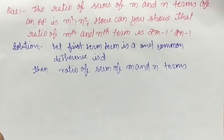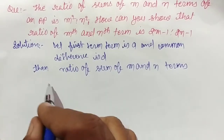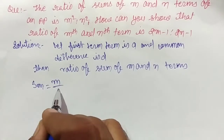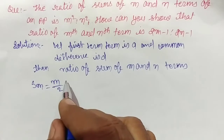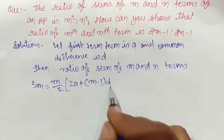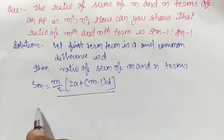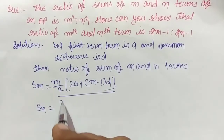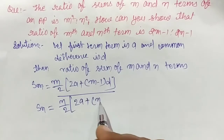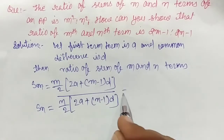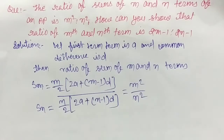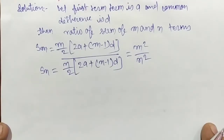Sm will be equal to (m/2) × (2a + (m-1)d), divided by Sn = (n/2) × (2a + (n-1)d), and this ratio equals m² divided by n².